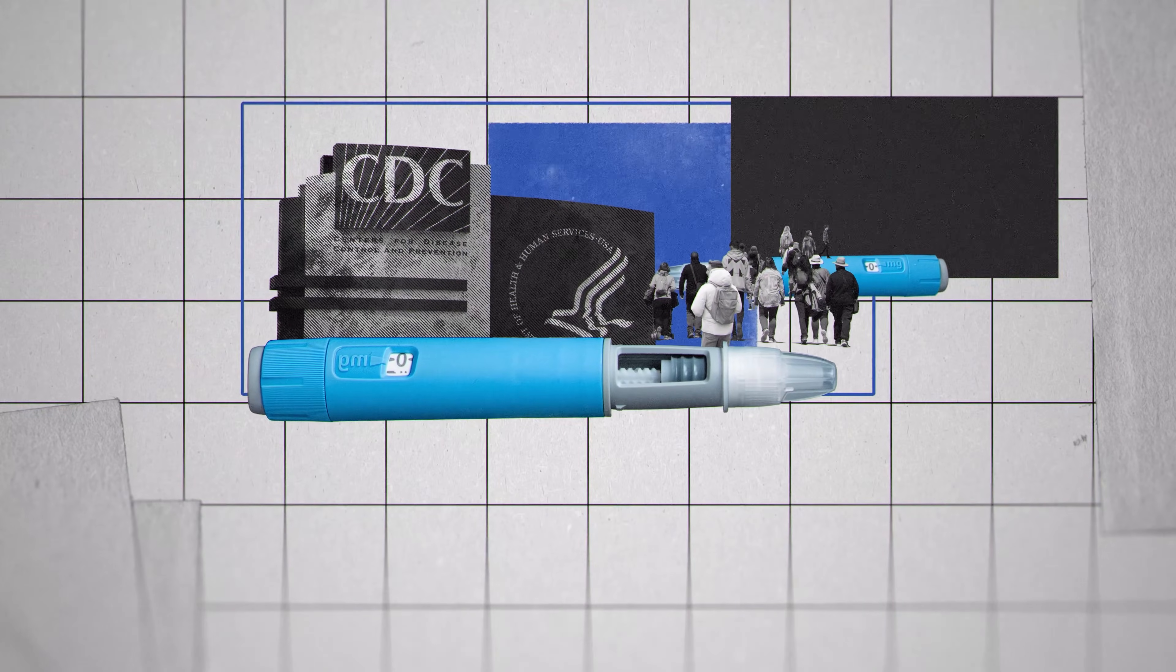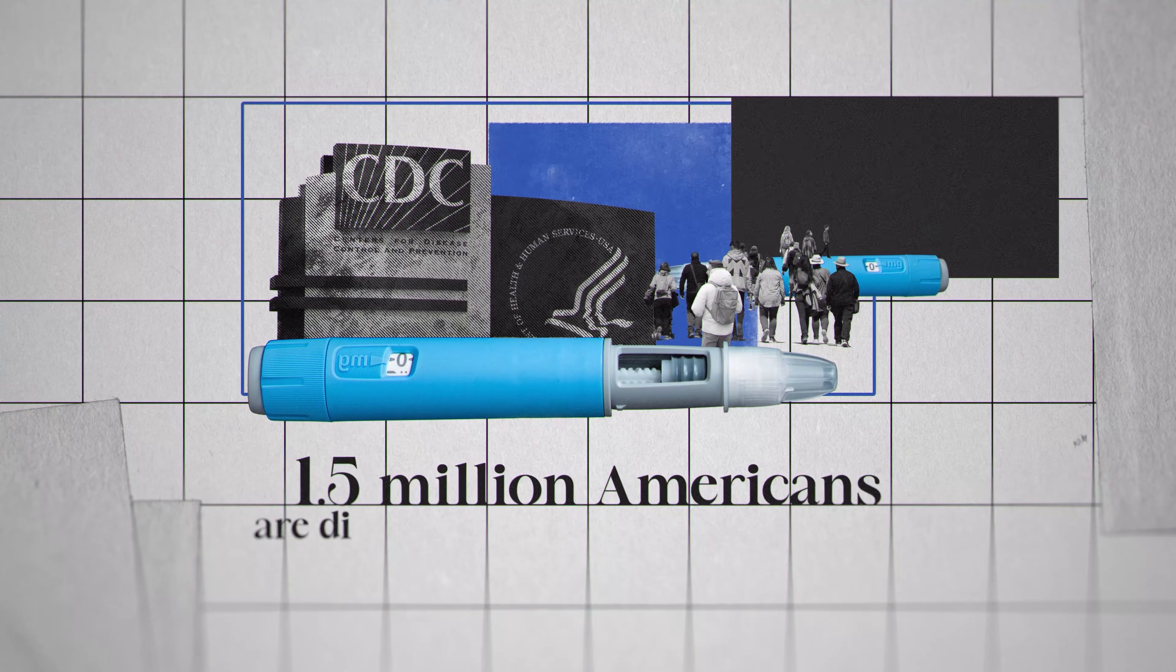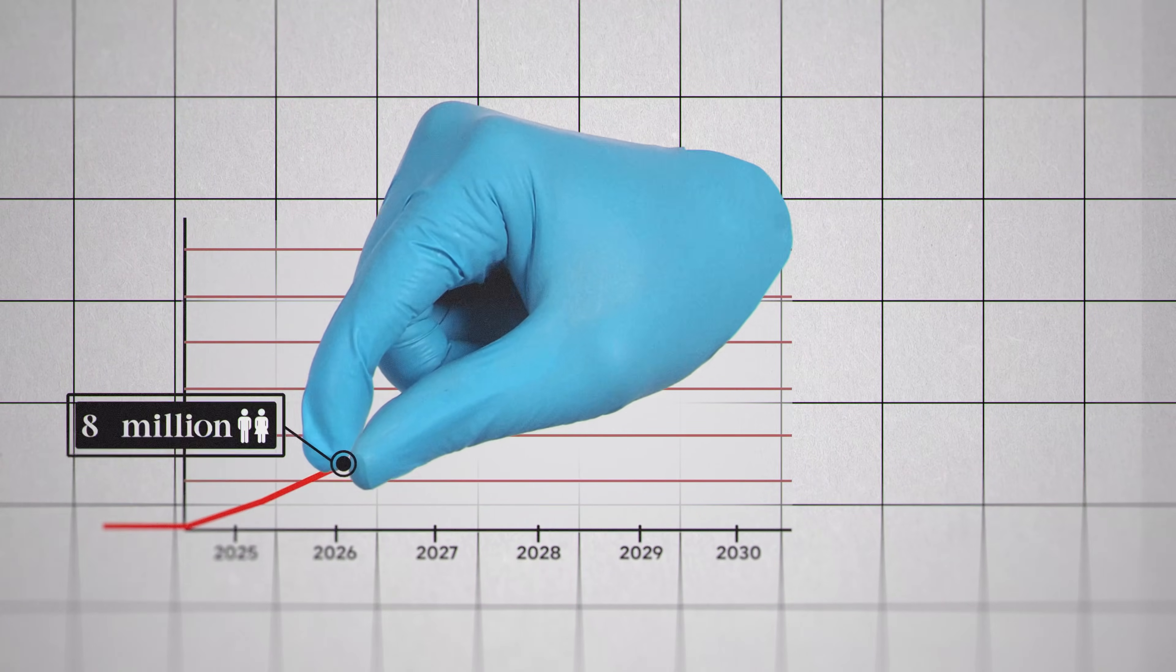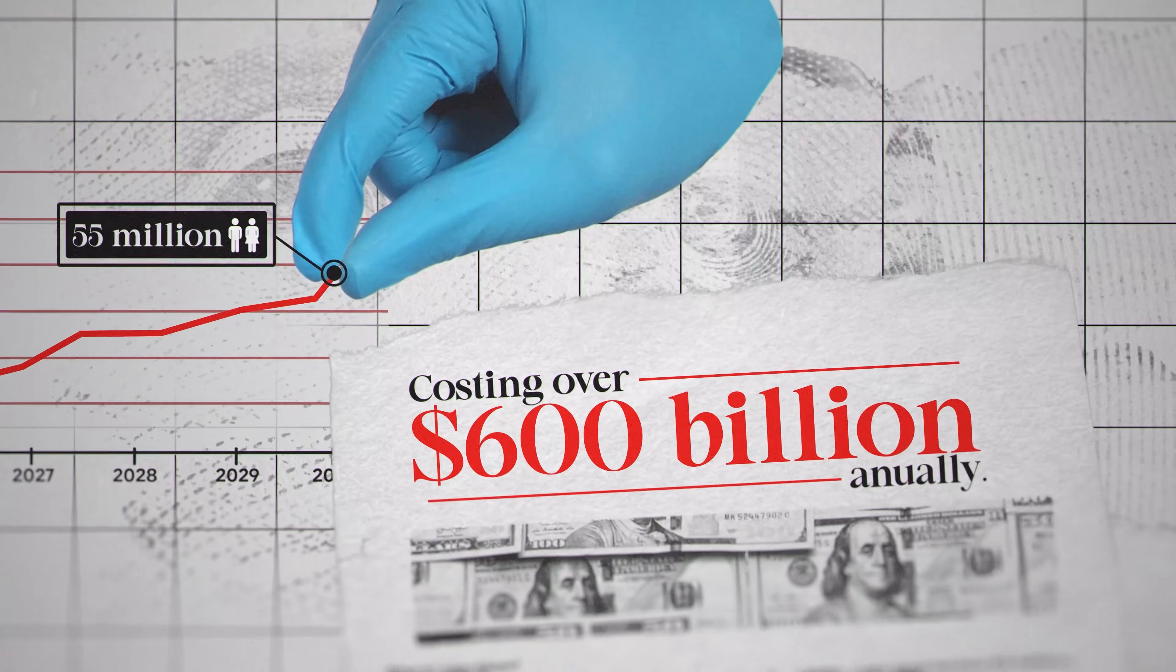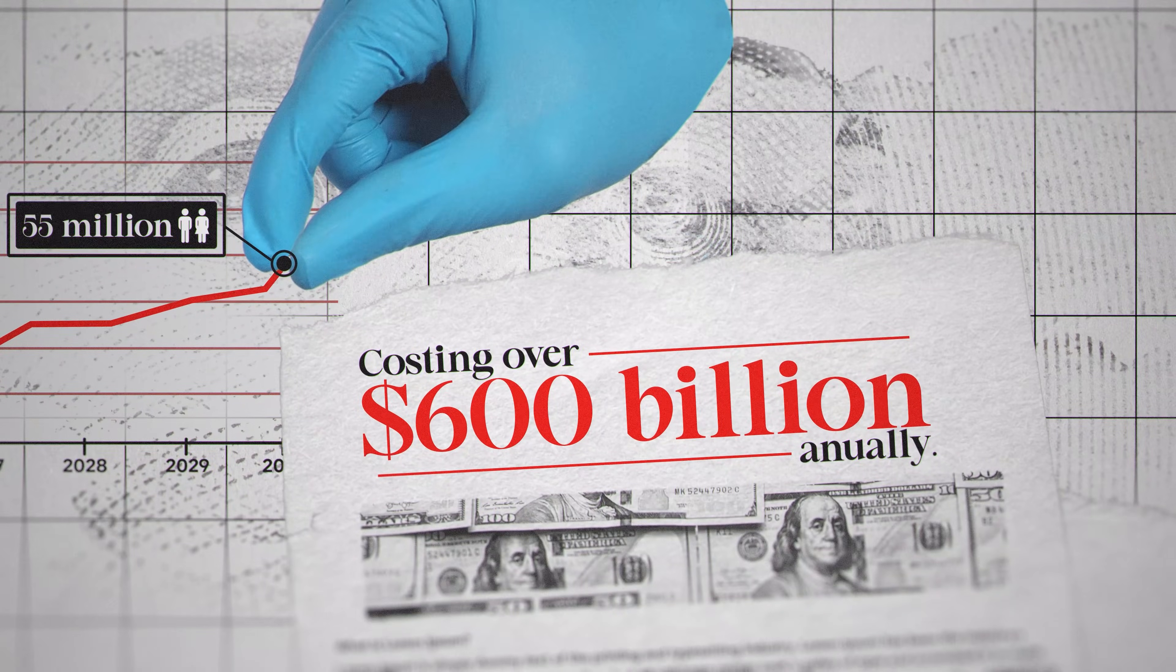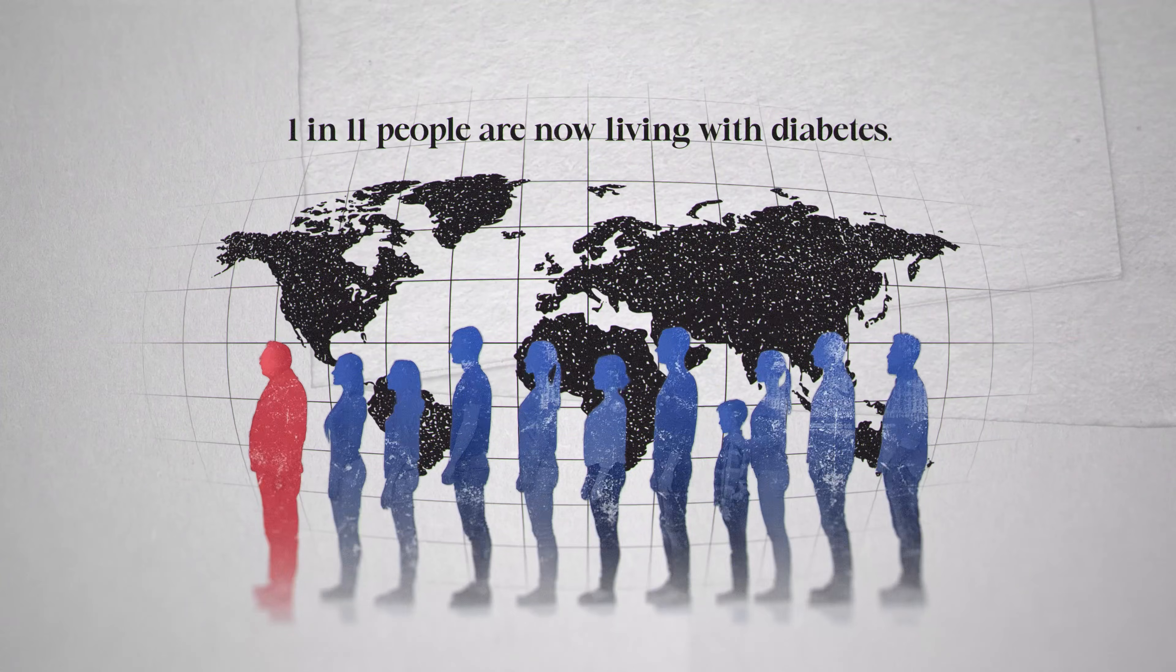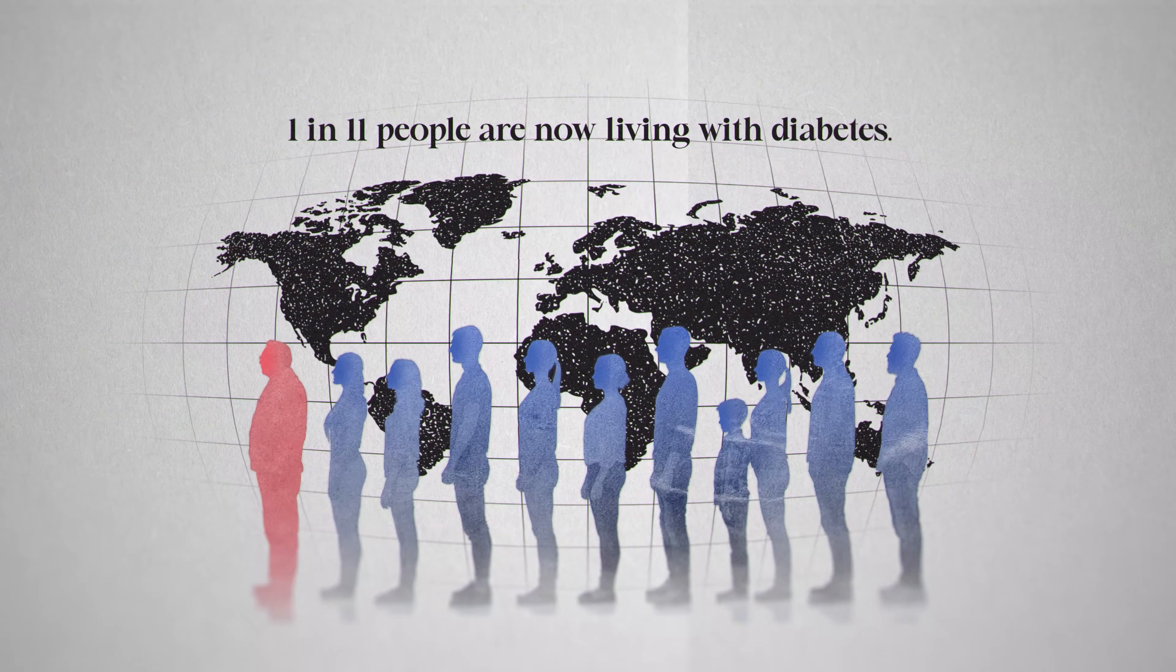According to the CDC, 1.5 million Americans are diagnosed with diabetes every year. By 2030, that number is expected to reach 55 million, costing over $600 billion annually. And it's not just in America. Around the world, 1 in 11 people are now living with diabetes.